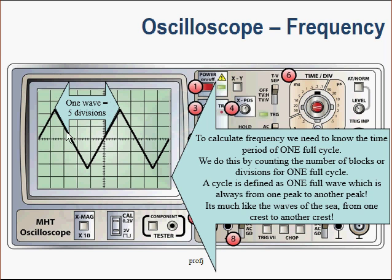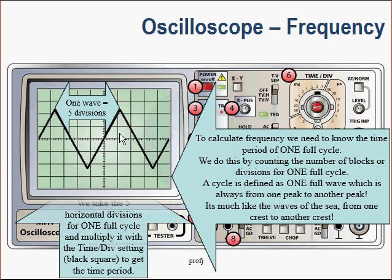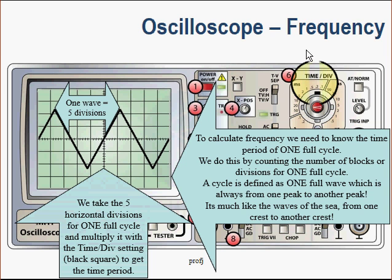One, two, three, four, five that make up one cycle. These five divisions we need to multiply with the time per division setting, which we will find on the top right-hand side of the oscilloscope. We're looking at that black square, which is pointing at 0.2 milliseconds.